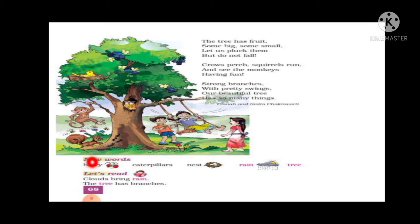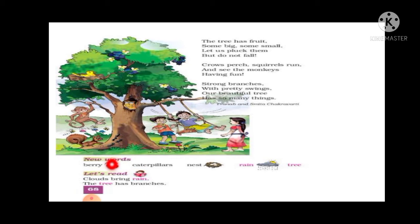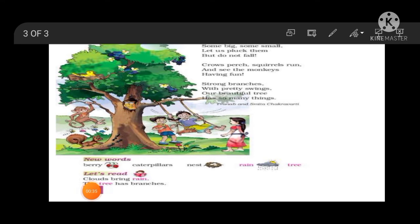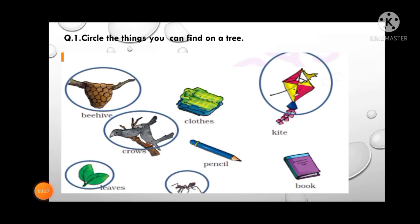Now let's see the new words. Berry means a small juicy fruit. Caterpillar means the young one of a butterfly. Nest — here is the nest. Rain means drops of water. You can see the tree. Clouds bring rain and the tree has branches.